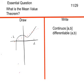The Mean Value Theorem function must be continuous, and the slope point must be between negative 2 and 2.